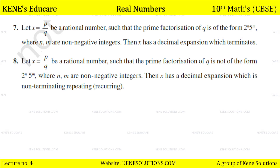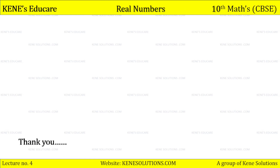Summary of theorems on decimal expansions: If x = p upon q is a rational number with q of the form 2^n × 5^m, n, m non-negative integers, then x has a terminating decimal expansion. If the prime factorization of q is NOT of the form 2^n × 5^m, then x has a non-terminating repeating or recurring decimal expansion. With this, today's lecture — number 4 of chapter 1 on real numbers — comes to an end.